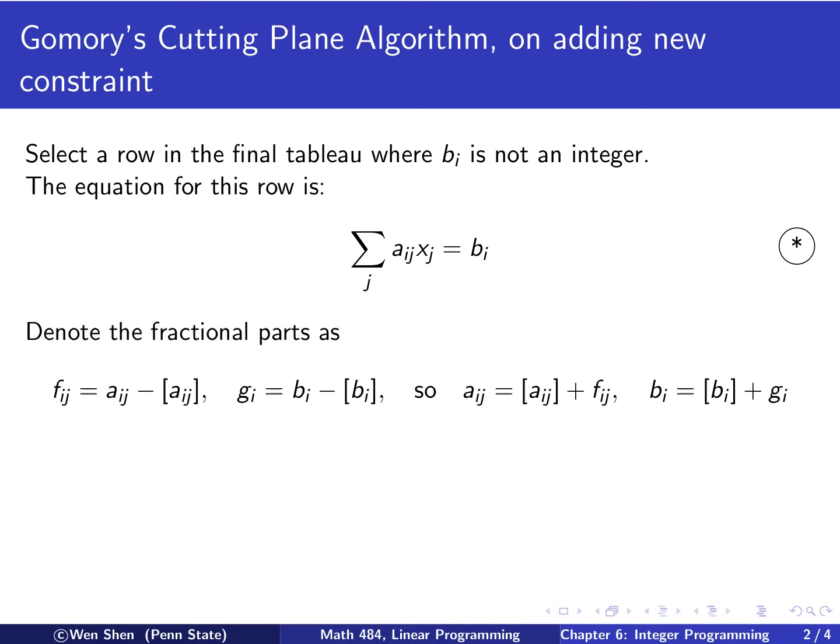Now we are going to split all the coefficients into the integer part and the fractional part, and we're going to denote the fractional parts with some shorter notation. For the coefficient Aij, the fractional part, we call it fij. And for the vector bi, the fractional part, I call it gi. So with this notation, I can write Aij now as the integer part plus the fractional part, and I can write bi also as the integer part plus the fractional part. Remember, the fractional parts are non-negative and less than 1.